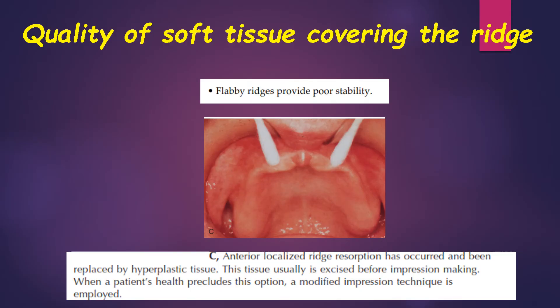The next factor is the quality of soft tissue covering the ridge. Flabby ridges provide poor stability. The ridge should provide a firm soft tissue base with adequate submucosa to offer good stability, whereas flabby tissues with excessive submucosa offer poor stability.